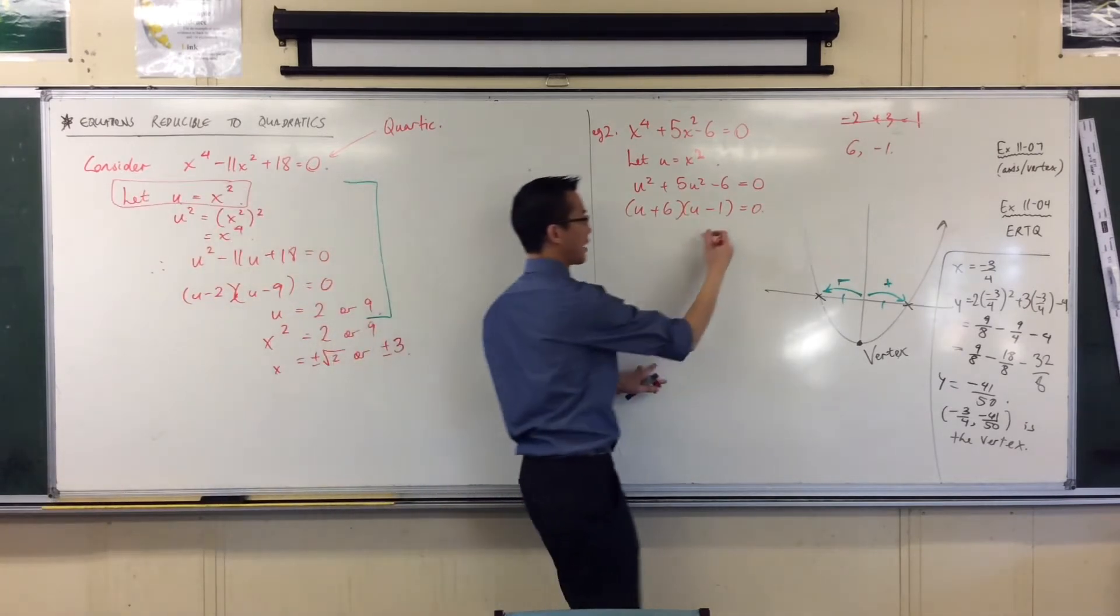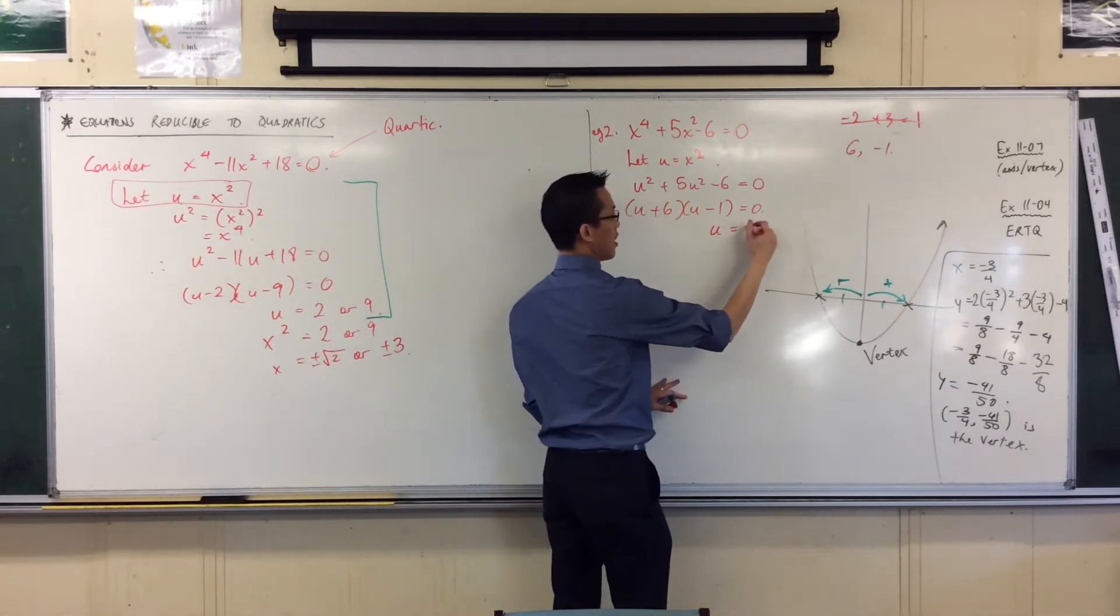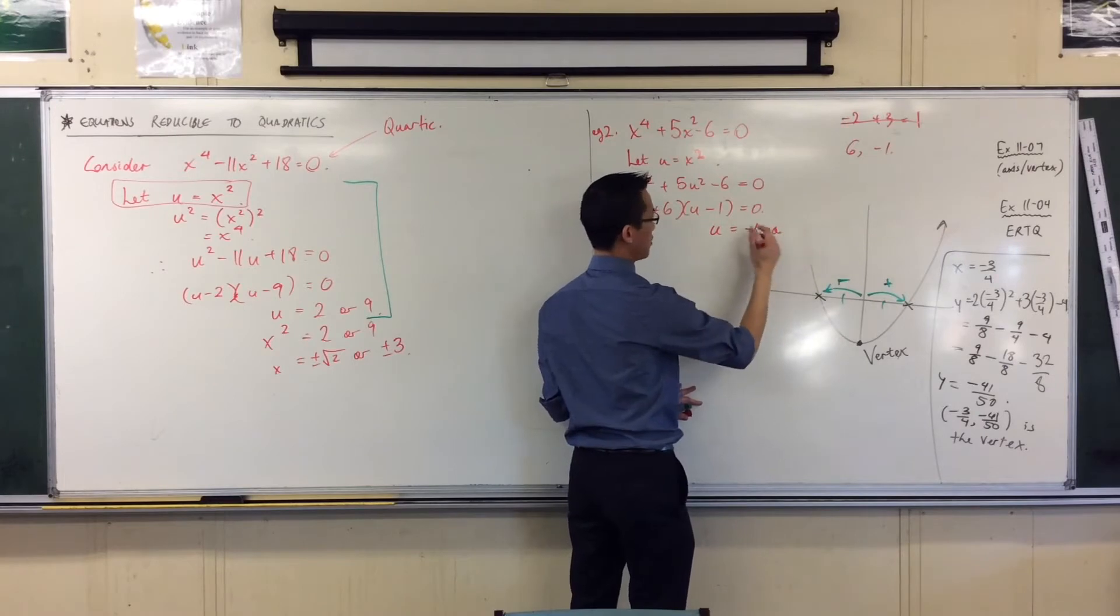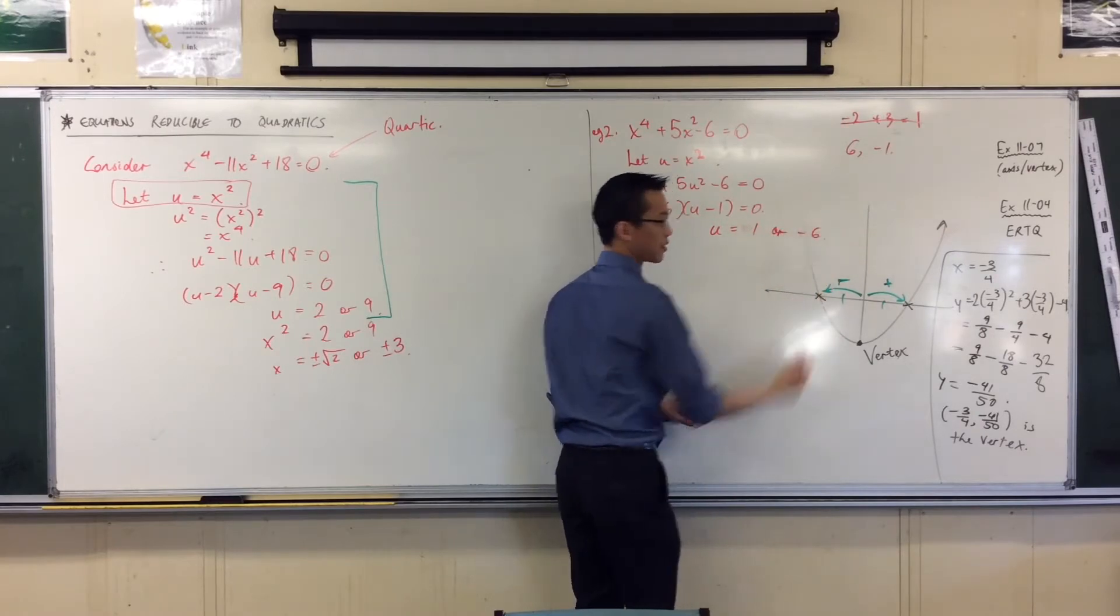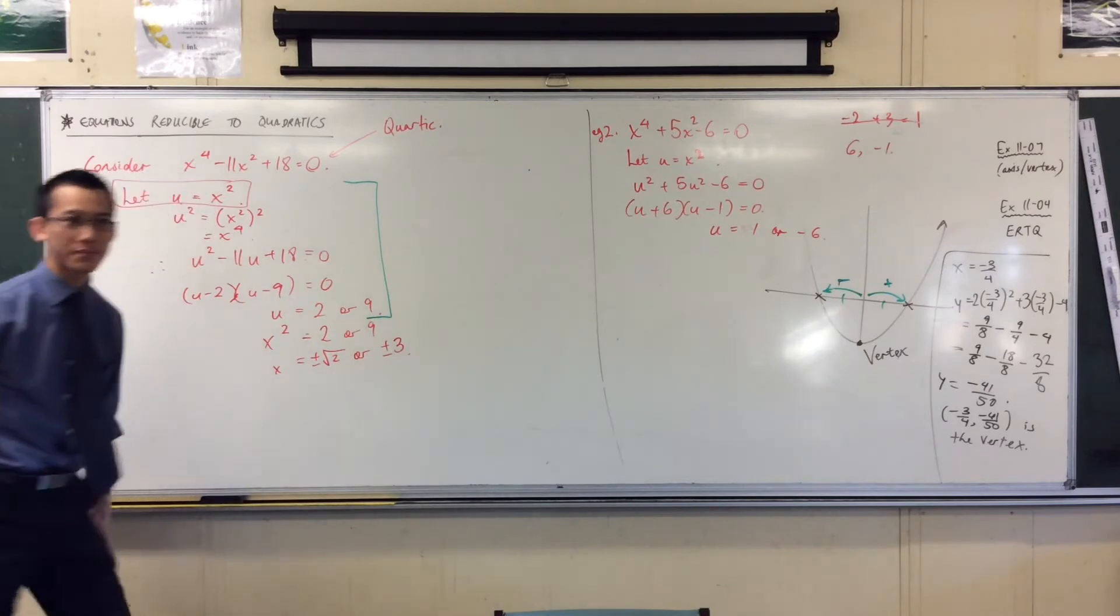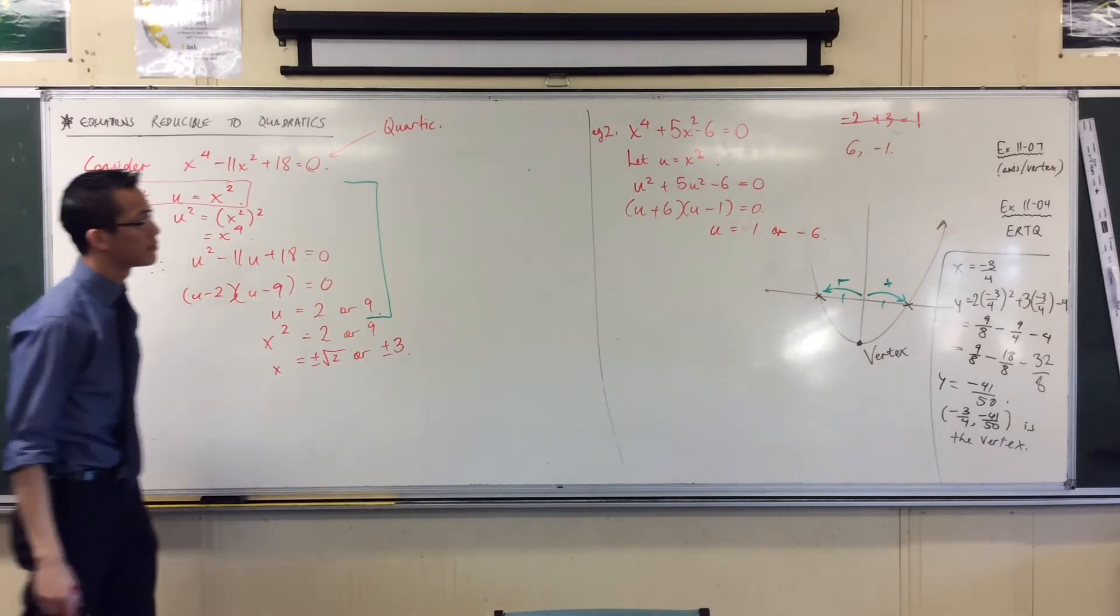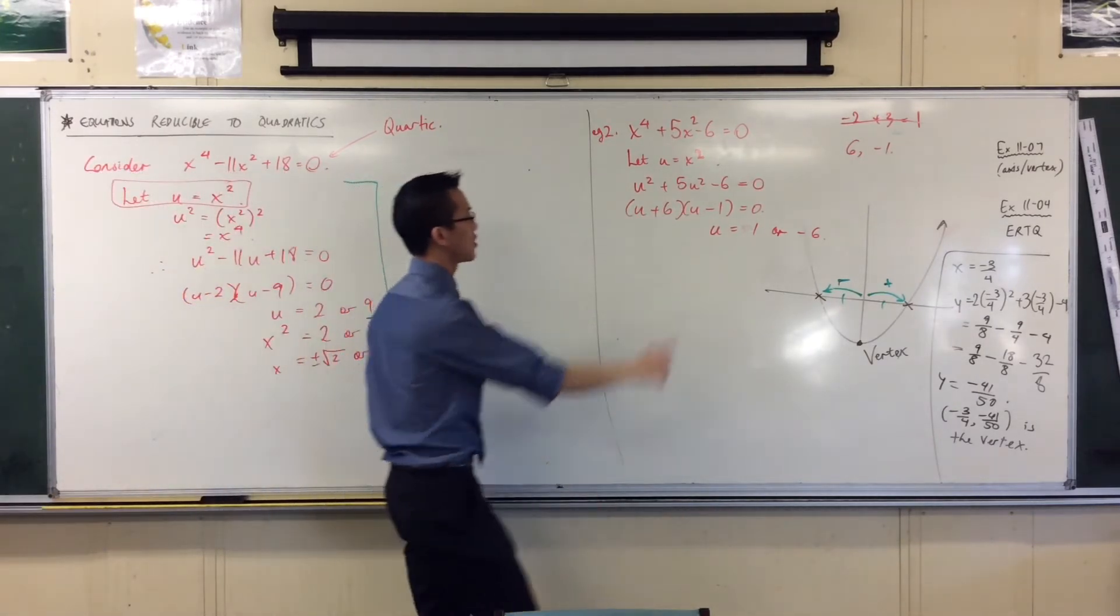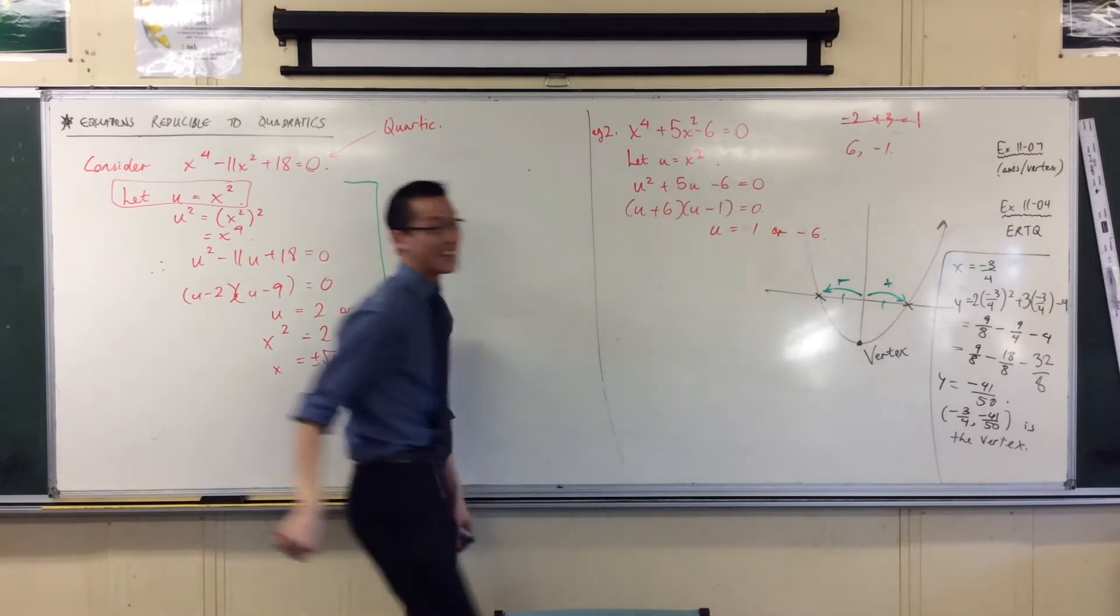Okay, so now I can go ahead and solve: positive 1 or negative 6. I mean, u squared plus 5u squared. Why did 5u squared? Oh sorry. Yeah, that's wrong. Is that better? Thanks.